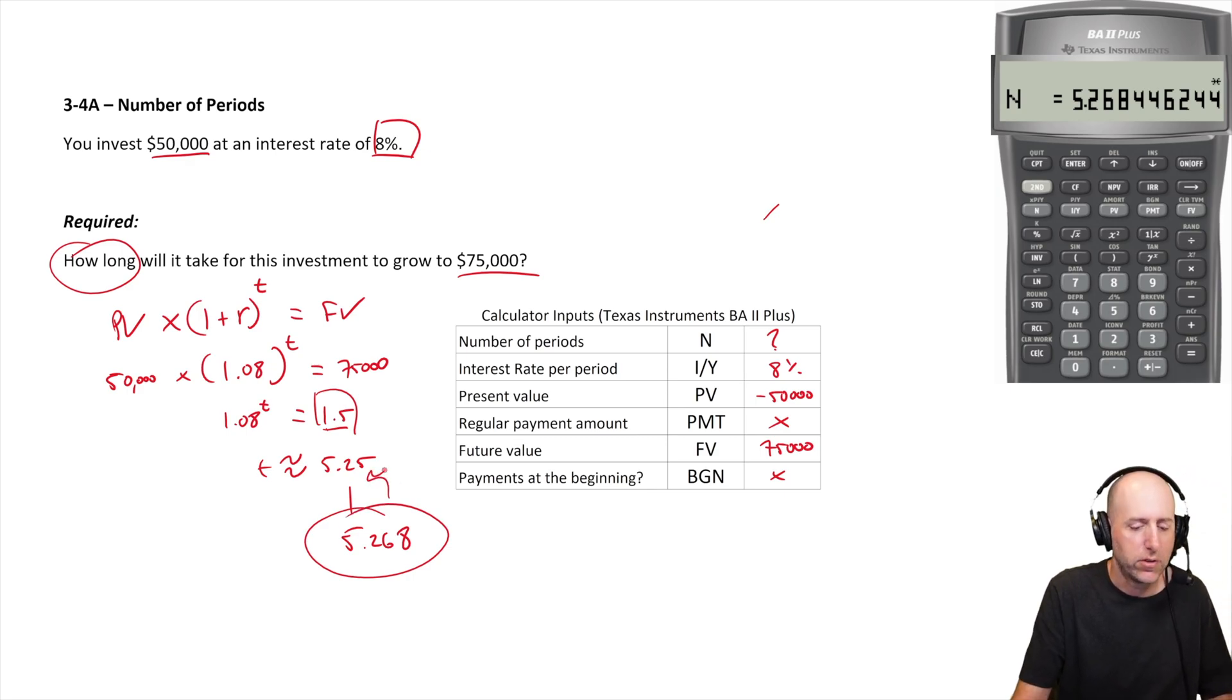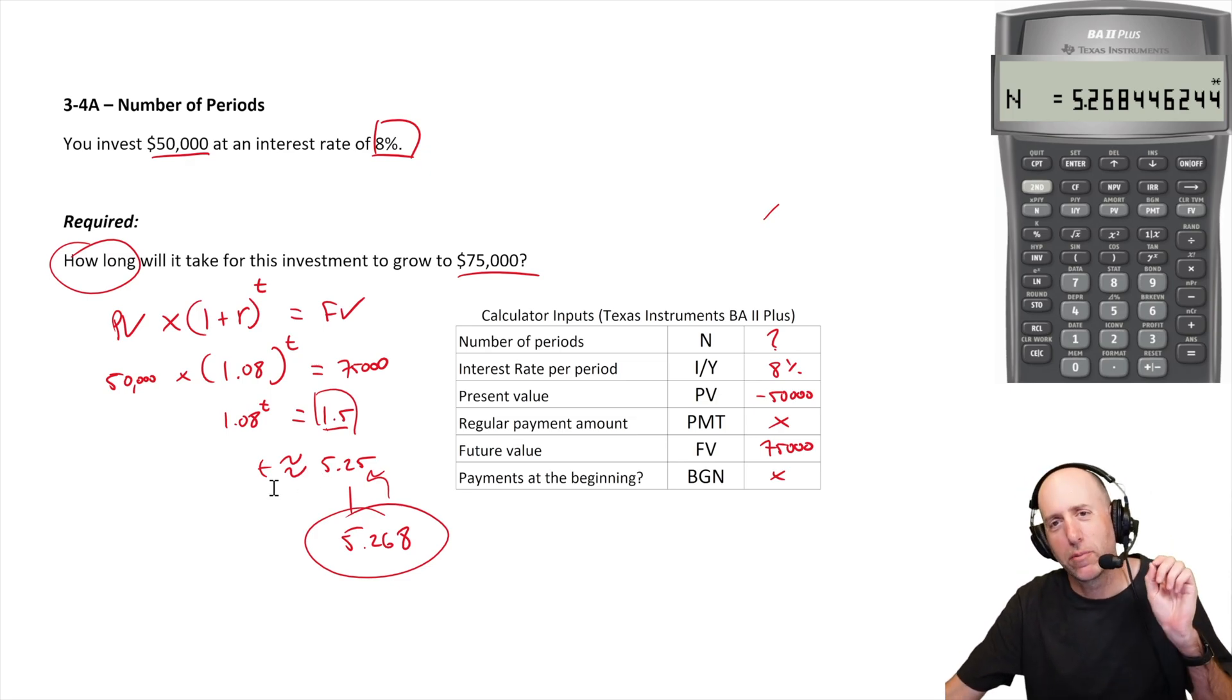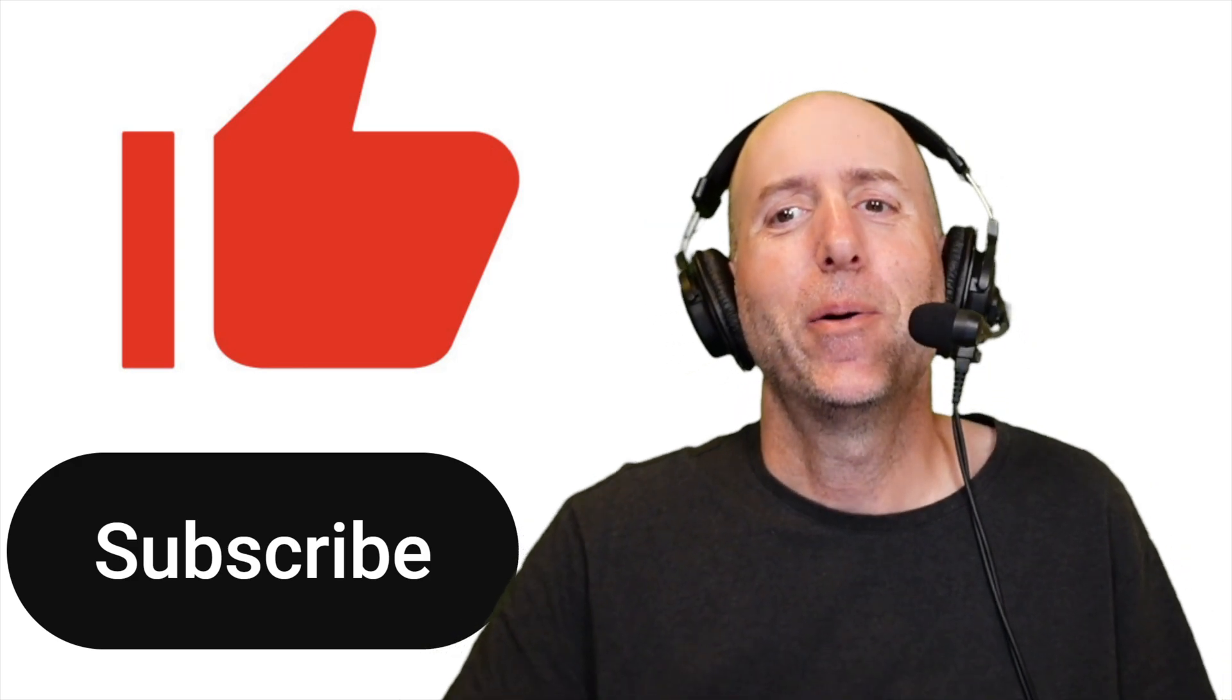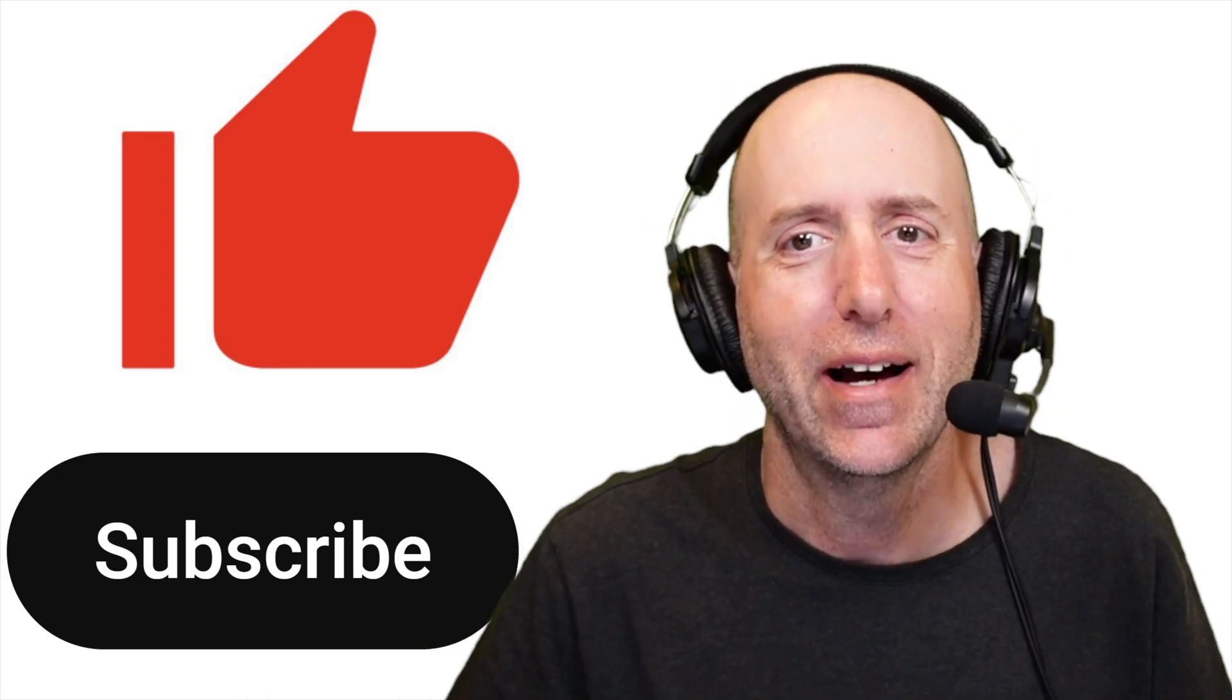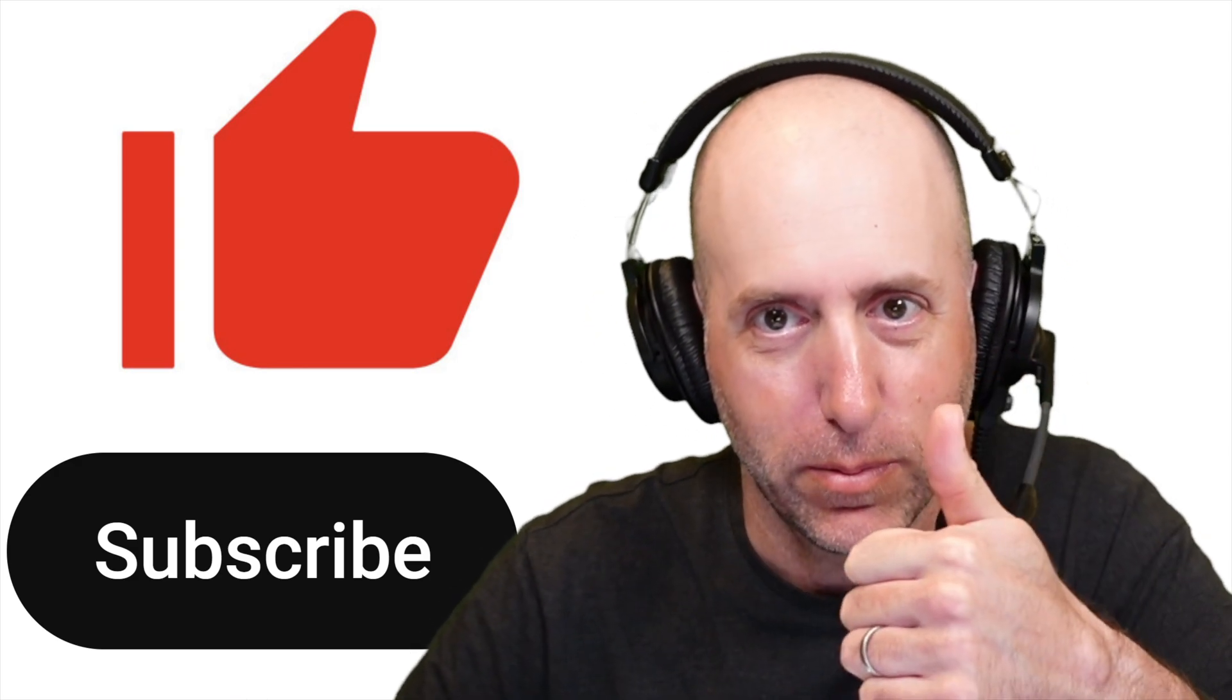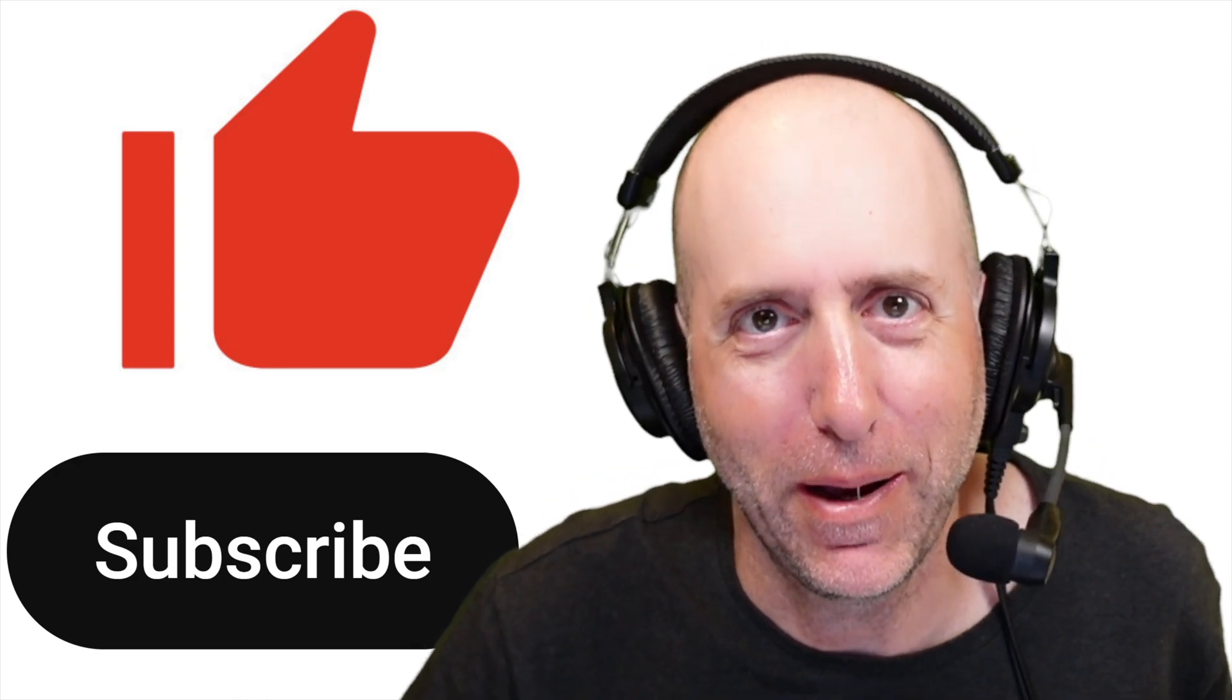So we knew we were close, but 5.268 is a more precise answer than 5.25. There we have it, we've solved 3.4a. We did it the trial and error way and we got close, and we could have got closer if we just stuck with it. Now we've got a much more precise answer using our financial calculator. I hope this video helped you. If it did, I hope you'll give me the old thumbs up. Thanks for watching, bye bye.